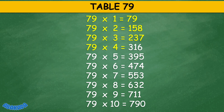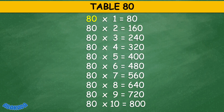Table 79: 79 times 1 equals 79, 79 times 2 equals 158, 79 times 3 equals 237, 79 times 4 equals 316, 79 times 5 equals 395, 79 times 6 equals 474, 79 times 7 equals 553, 79 times 8 equals 632, 79 times 9 equals 711, 79 times 10 equals 790.